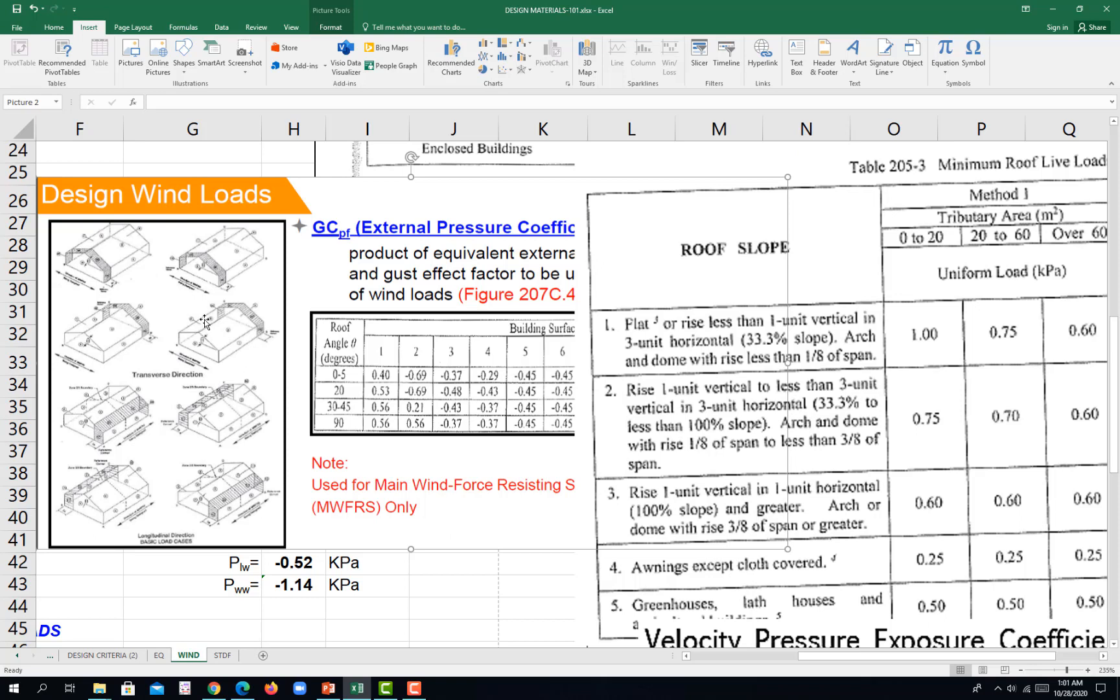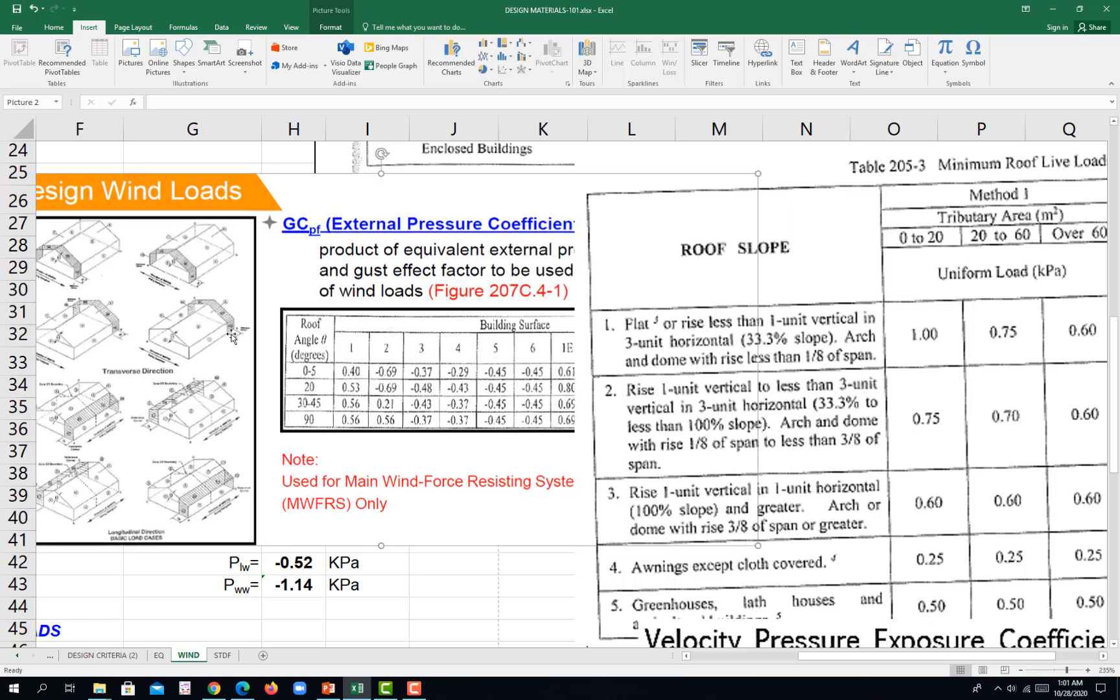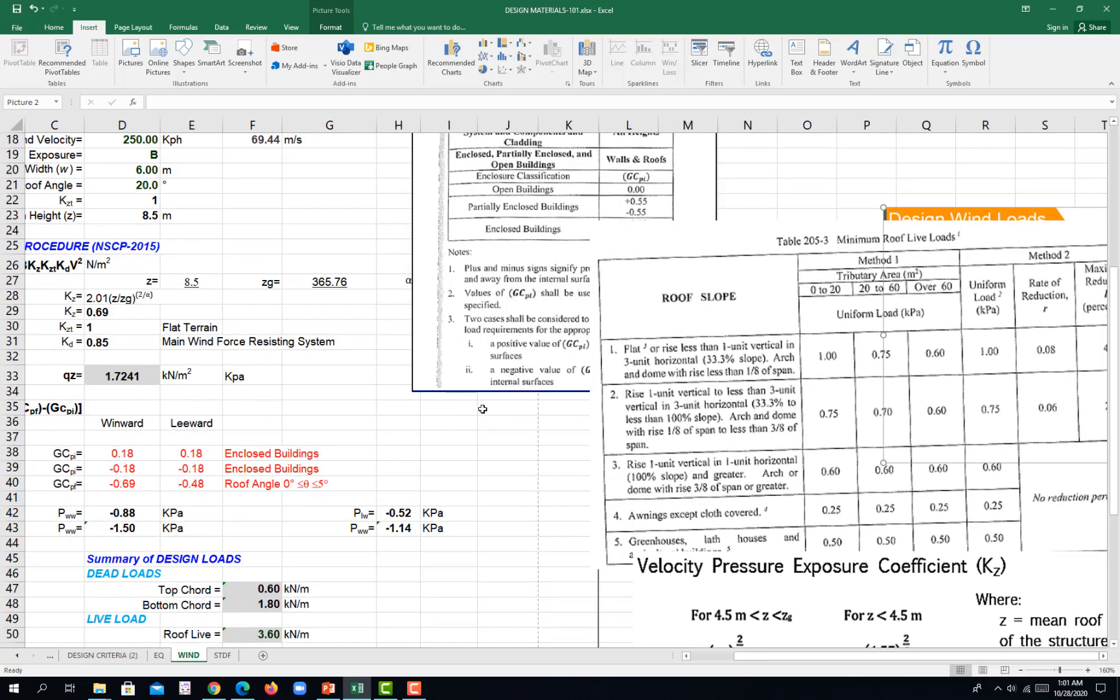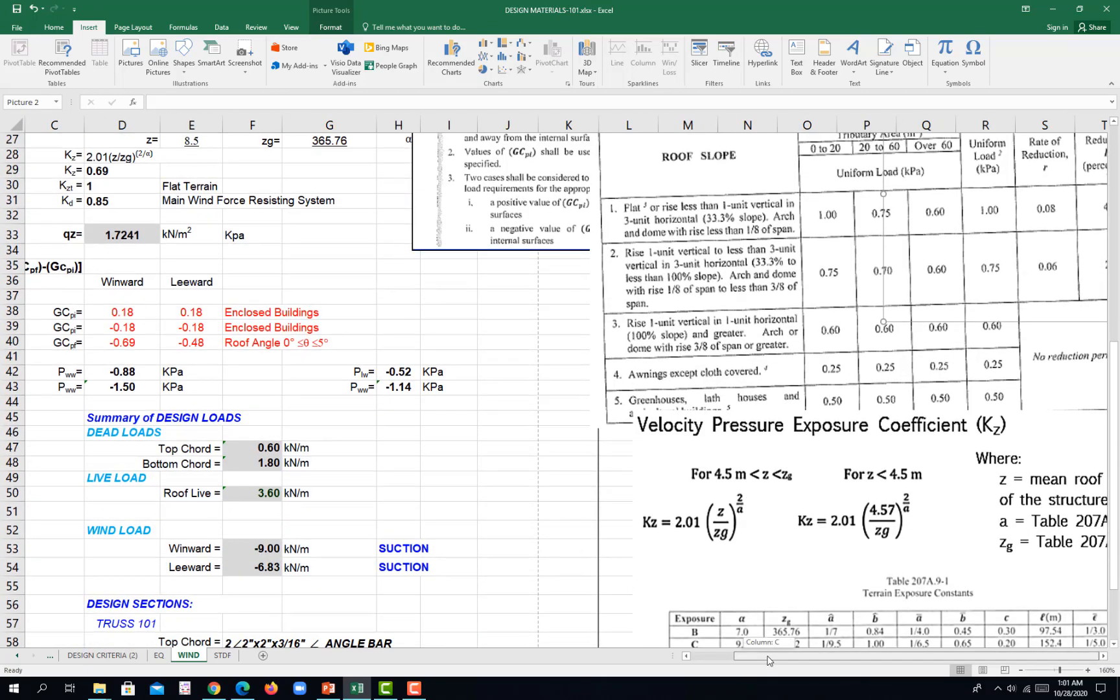And then for the GCPF, we try to assume that our truss is located at Surface 2 and then 3, Surface 2 and 3 based on this figure. Under 20 degree angle, you have negative 0.69 and then negative 0.48.